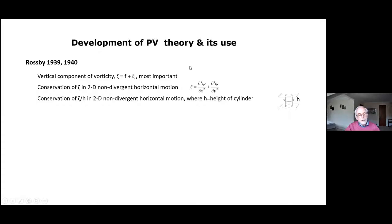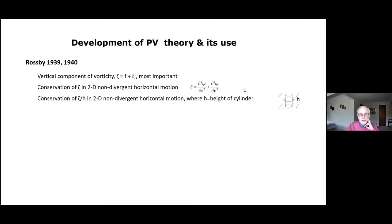In the first of those papers, Rossby pointed out that it was the vertical component of vorticity — the absolute vorticity, which is the Coriolis parameter plus the relative vorticity — that was most important. He talked about the conservation of absolute vorticity in 2D non-divergent horizontal motion. The key ideas are: absolute vorticity is conserved, and if you know it, you can invert it to get the stream function and then the flow, giving you the advecting velocity.